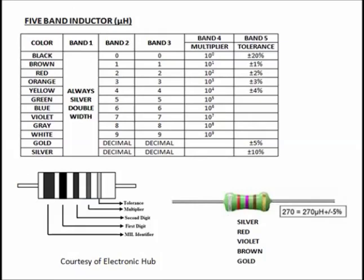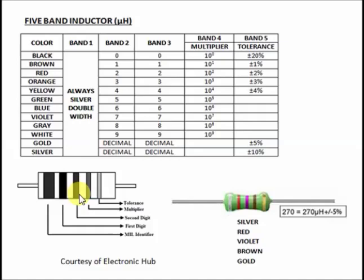For a 5-band inductor, the first color band is thicker than the rest — this is always the military marking used for radio frequency applications, so it has no reading value. Start your reading from the second color up to the fifth: the second color is the first digit, the third color is the second digit, the fourth color is the multiplier, and the fifth color is the tolerance.